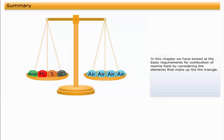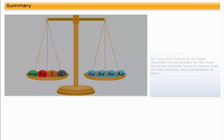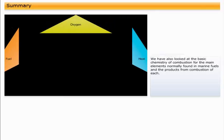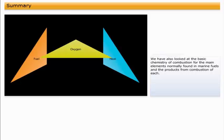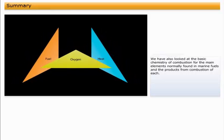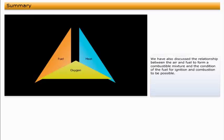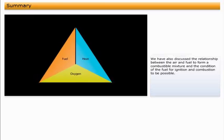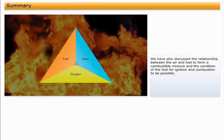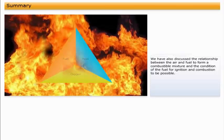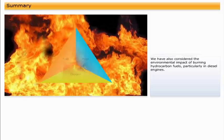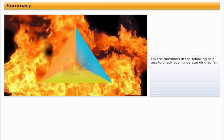In this chapter, we have looked at the basic requirements for combustion of marine fuels by considering the elements that make up the fire triangle. We have also looked at the basic chemistry of combustion for the main elements normally found in marine fuels and the products from combustion of each. We have also discussed the relationship between the air and fuel to form a combustible mixture and the condition of the fuel for ignition and combustion to be possible. We have also considered the environmental impact of burning hydrocarbon fuels, particularly in diesel engines. Try the questions in the following self-test to check your understanding so far.